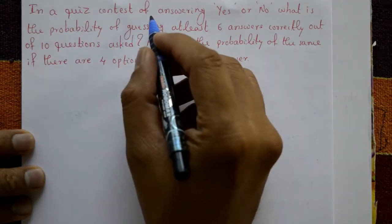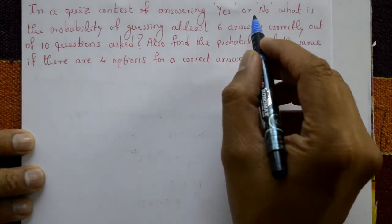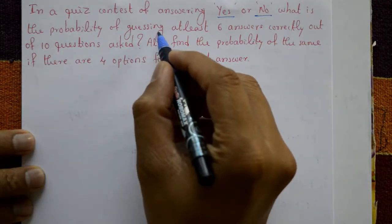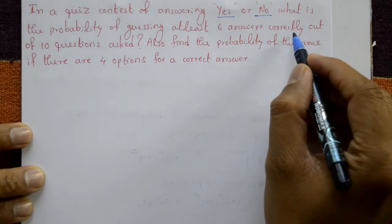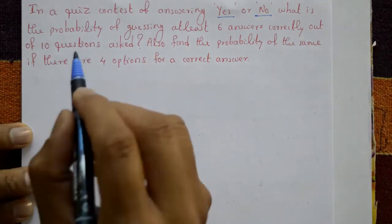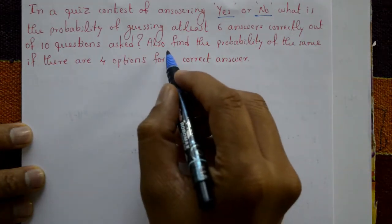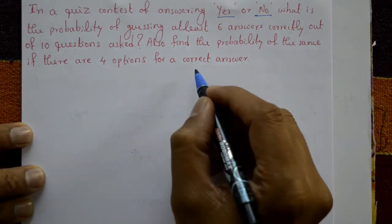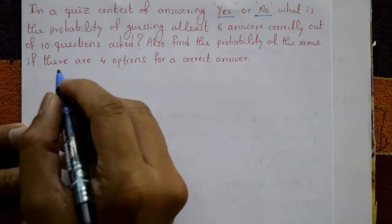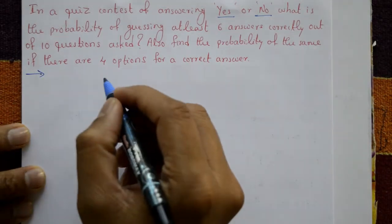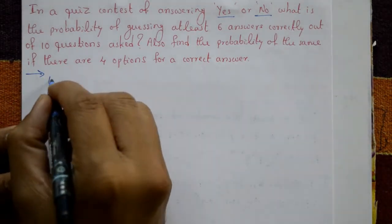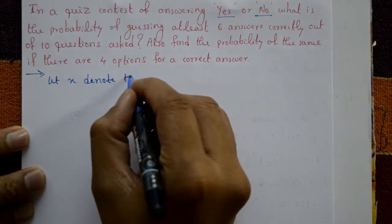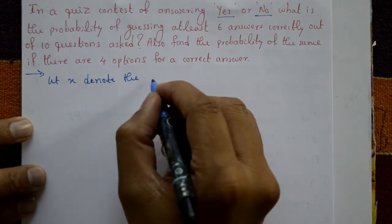In a quiz contest of answering yes or no, what is the probability of guessing at least six answers correctly out of ten questions asked? Also find the probability of the same if there are four options for a correct answer. We will use binomial distribution. Let X denote the number of correct answers.